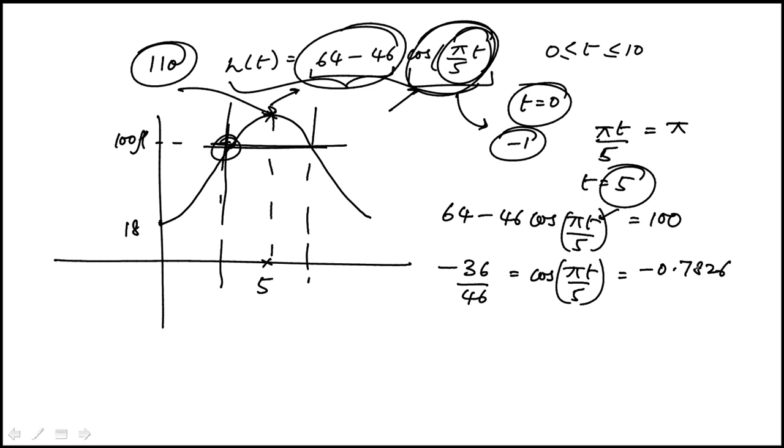Do the cosine inverse of that. Make sure you have it as a minus. So that's 2.469 equal to pi t over 5. So t would be 2.469 times 5 divided by pi, which gives 3.93.